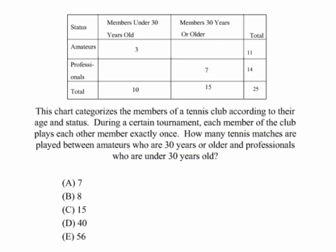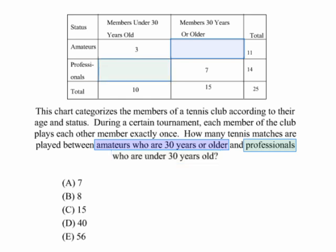This is a chart or graph problem where you're being asked to interpret something from the chart — you're going to have to do a little bit more work than just look at it. We want to find how many matches are played between amateurs 30 years or older. We'll find those in this box, and professionals who are under 30 years — we look at that box.